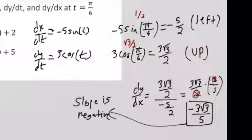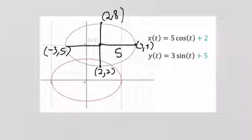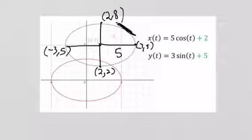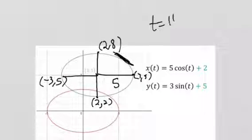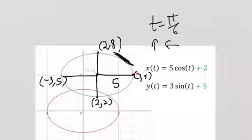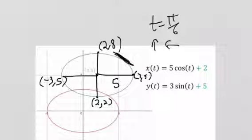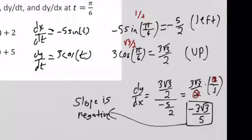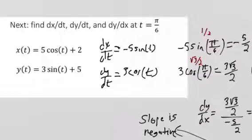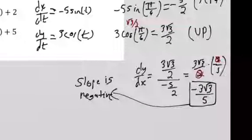Going back to look at the curve: at t = π/6, the point is somewhere in the upper right region of the ellipse. Notice how all of the slopes there are negative — a tangent line there has a negative slope. The object is moving left and up, following the counterclockwise trajectory. So the derivative told us both the direction of movement and the slope of the curve without actually having to look at it. We can plug in any t value to get the horizontal movement, vertical movement, and overall slope — the rise over the run.